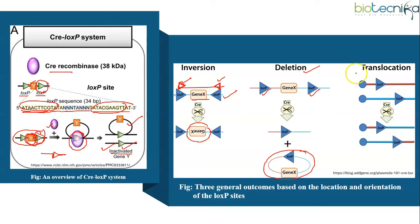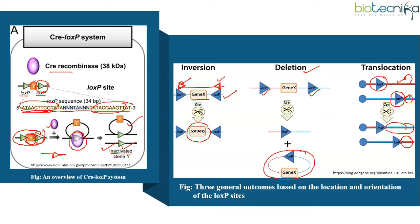Translocation on the other hand will happen if the LOX-P sites are on separate DNA molecules. A translocation event is generated at the LOX-P site, where some portion of one DNA strand comes over to the other, as shown with the red and blue colors. This is an overview of the CRE-LOX-P system and the three general outcomes based on location and orientation of LOX-P sites.